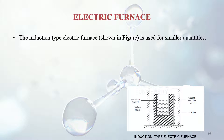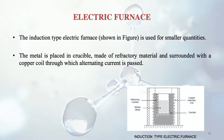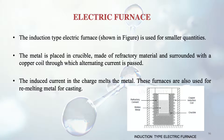A third variety is the induction type electric furnace, which is used for smaller quantities — not the 60 to 90 tons of the arc furnace. The metal is placed inside a crucible made of refractory material, surrounded by a copper coil through which alternating current is passed. The induced current in the charge melts the metal. These furnaces are also used for re-melting metal for casting.